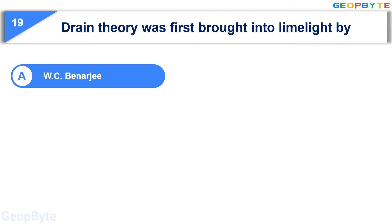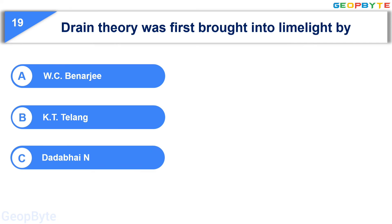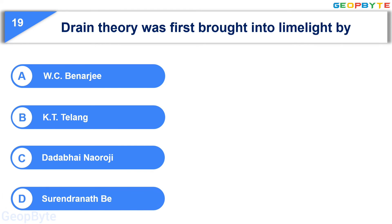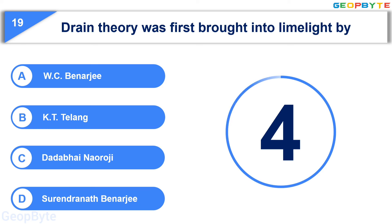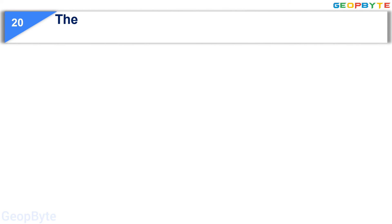Moving to the nineteenth question: the Drain Theory was first brought into limelight by — Option A: W.C. Banerjee, Option B: K.T. Telang, Option C: Dadabhai Naoroji, Option D: Surendranath Banerjee. Your time starts now. Your time is up and the correct answer is Option C: Dadabhai Naoroji.